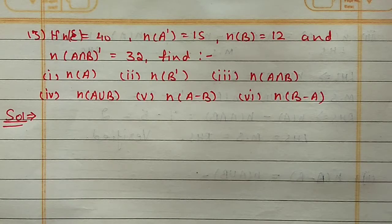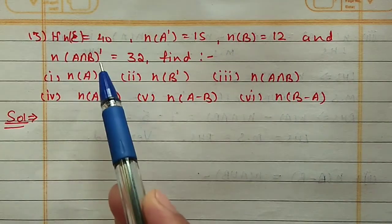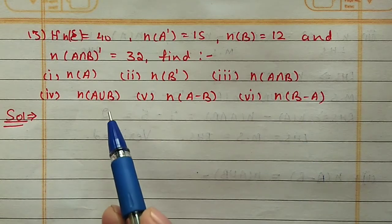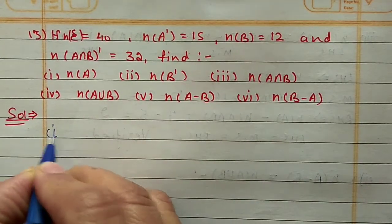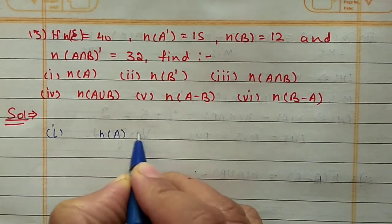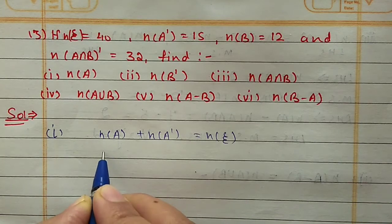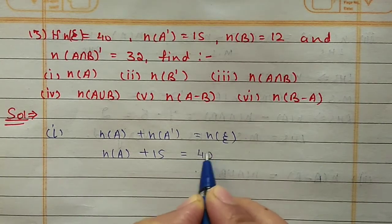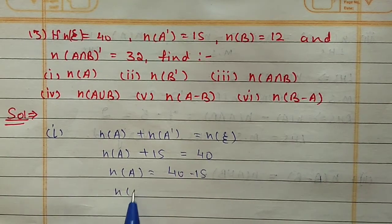Question 13: N(U) = 40, N(A') = 15, N(B) = 12, N((A∩B)') = 32. Find N(A), N(B'), N(A∩B), N(A∪B), N(A - B), and N(B - A). For the first part, N(A): using the fifth property N(A) + N(A') = N(U). N(A') is 15 and N(U) is 40, so N(A) = 40 - 15 = 25.